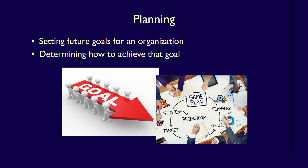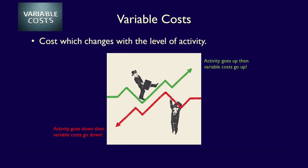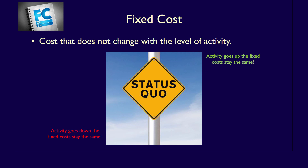Variable and fixed costs do not behave in the same way when the level of activity changes. Variable costs change as the level of activity changes — as activity goes up, variable costs go up, and as activity goes down, variable costs go down. Fixed costs do not change as the level of activity goes up or down; fixed costs always remain the same, of course, within the relevant range.